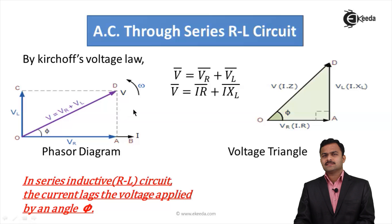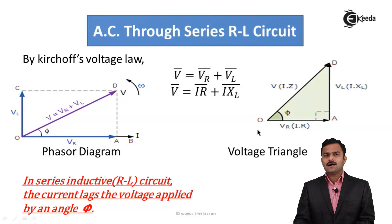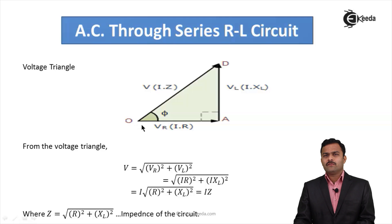Considering the angle made by V with I (the positive x-axis), V is ahead of I in the anti-clockwise sense. The conclusion is: in a series inductive (RL) circuit, current lags the applied voltage by angle φ, or equivalently, voltage leads current by angle φ.